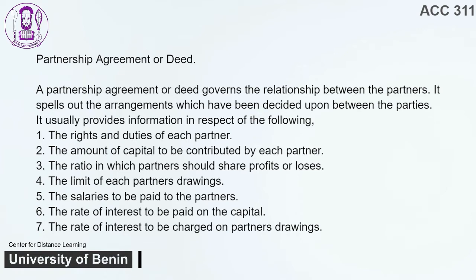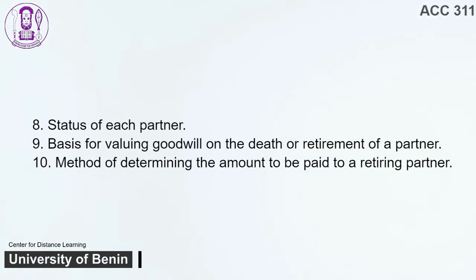The partnership agreement usually provides information in respect of the following: 1. The rights and duties of each partner. 2. The amount of capital to be contributed by each partner. 3. The ratio in which partners should share profits or losses. 4. The limit of each partner's drawings. 5. The salaries to be paid to the partners. 6. The rate of interest to be paid on the capital. 7. The rate of interest to be charged on the partner's drawings. 8. Status of each partner. 9. Basis for valuing goodwill on the death or retirement of a partner. 10. Method of determining the amount to be paid to a retiring partner.